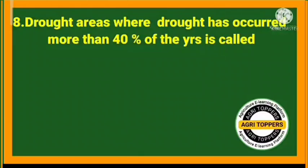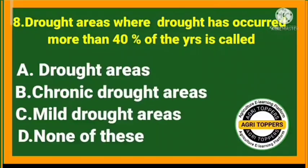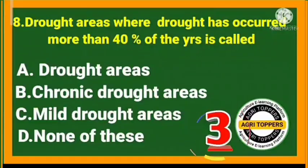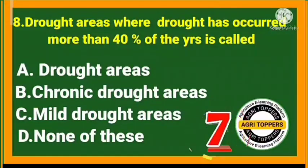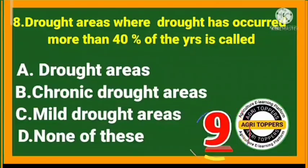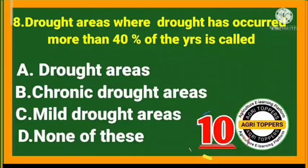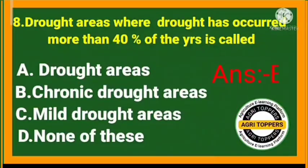Eighth question: drought areas where drought has occurred more than 40 percent of the years is called chronic drought areas.